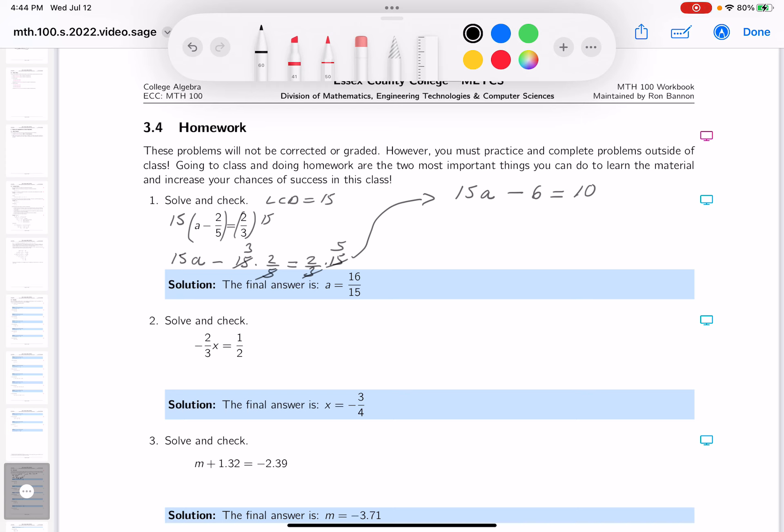What are you going to do now? Add 6 to both sides. What do you get? 15A equals 10. I'm sorry, not 10. My mistake. It equals 16. 10 plus 6 is 16, not 10.